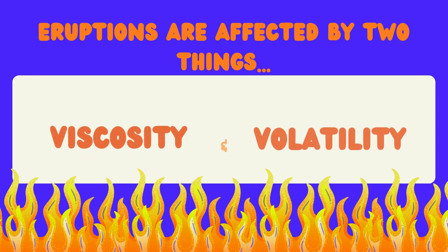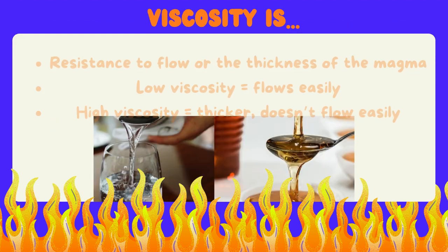Volcanic eruptions. The kind of eruption a volcano has is affected by two things: viscosity and volatility.